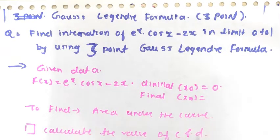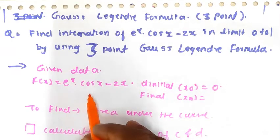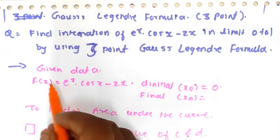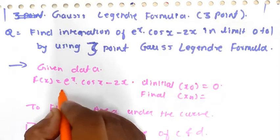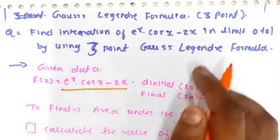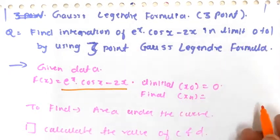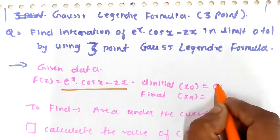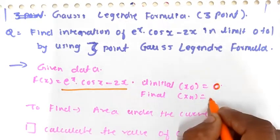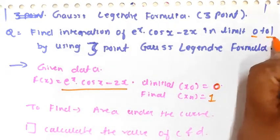The function is e raised to x cos x minus 2x. In the given data, the initial values are also given: x0 which is equal to 0, and xn which is equal to 1.